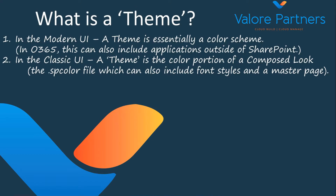In the modern UI, a theme has become essentially a JSON file where you're defining color buckets and what those color values will be. In the classic UI, a theme — what we're calling a theme — was referred to as a composed look, which included what's synonymous with the modern UI theme as an SP color file where you're defining all those colors. It also could include fonts and master page as well.